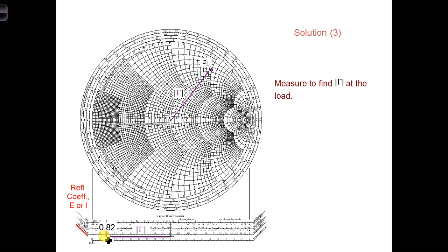Then we can find the reflection coefficient magnitude by using the radial scale at the bottom of the Smith chart. Measure the distance from the center of the Smith chart to the impedance dot, so that's right here. Measure that distance, say with a ruler, and then measure the same distance along the reflection coefficient magnitude scale at the bottom of the Smith chart. Starting from here where it's 0, measure out that same distance. We find for this example that the reflection coefficient magnitude is 0.82.